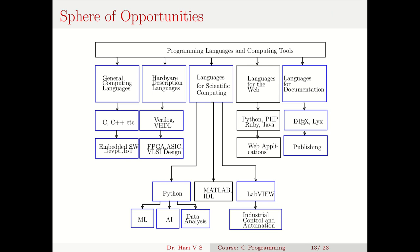This diagram depicts the sphere of opportunities — specifically the sphere of opportunities with programming languages and computing tools, drawn specifically for electronics students. Whatever is in blue boxes, you have to pay great attention to, as it will be quite useful in your four-year course. The programming languages and computational tools are organized into general computing languages, hardware description languages, languages for scientific computing, languages for the web, and languages for documentation. The web languages are mostly for computer science students, though some electronics engineers also work with the web.